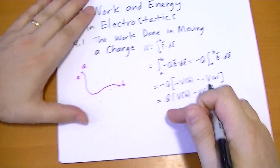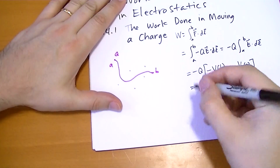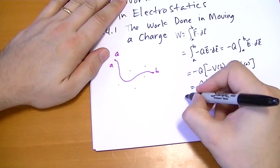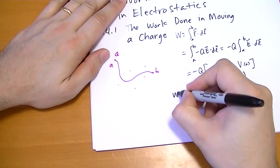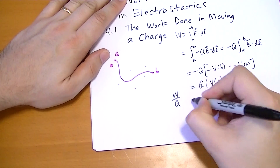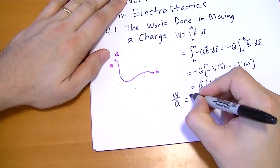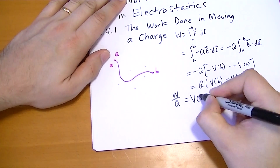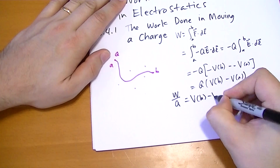Another way to look at it: if we divide through by Q, we see that work over Q is equal to the difference in potentials, V(B) minus V(A).